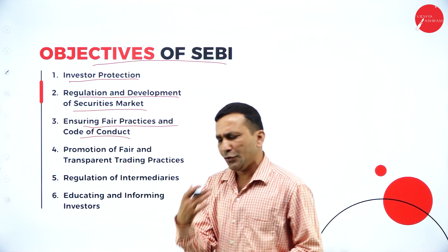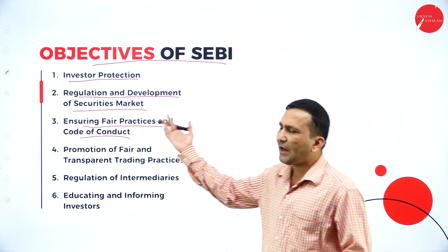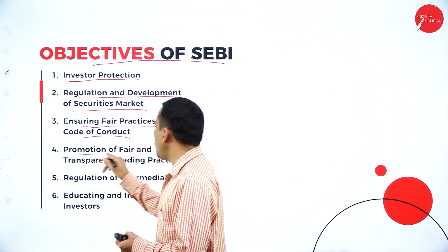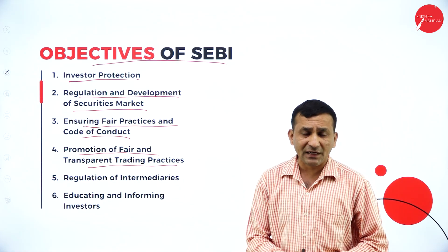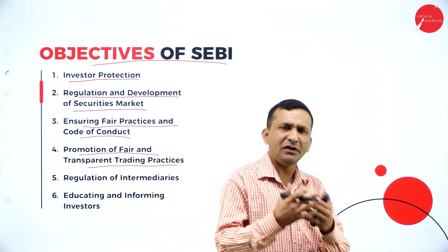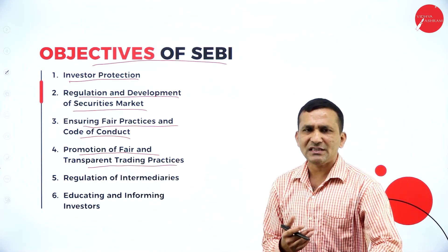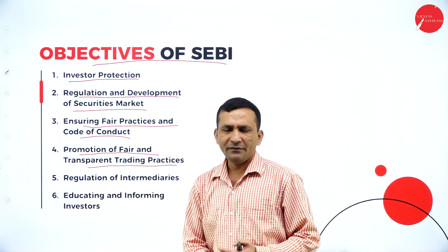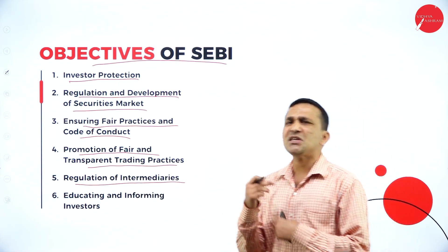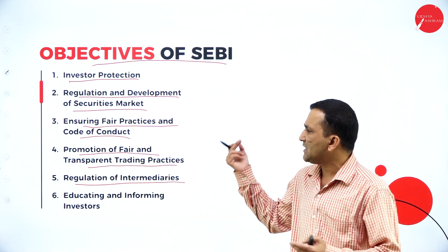Next is promotion of fair and transparent trading practice — they want to promote and create awareness so that a lot of investors come forward to go for investing. Whatever the transaction between the company and the investor, if the transaction is transparent, that is very good. Next is regulation of intermediaries — between investors and the company, there are brokers or intermediaries connected, acting as agents. Some guidelines are required for them also.